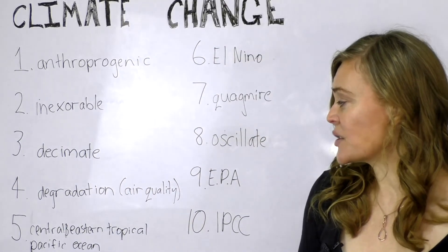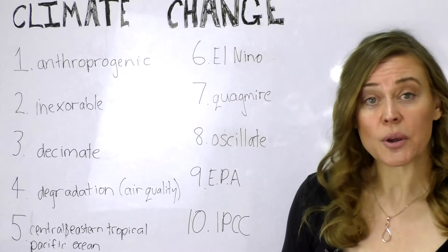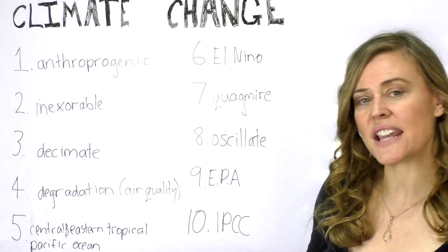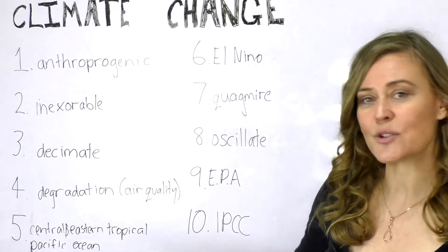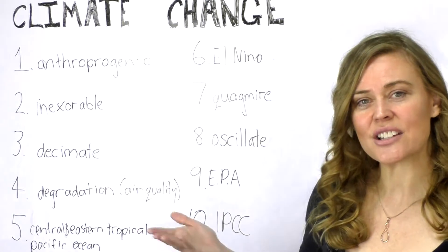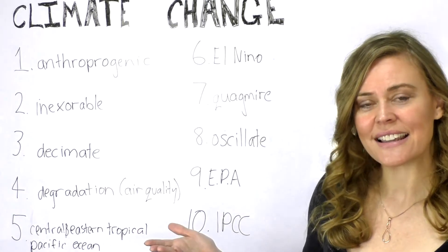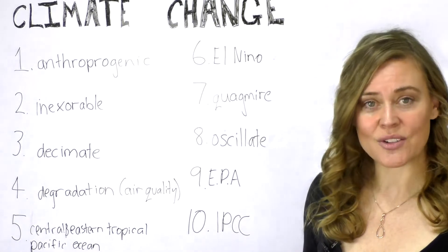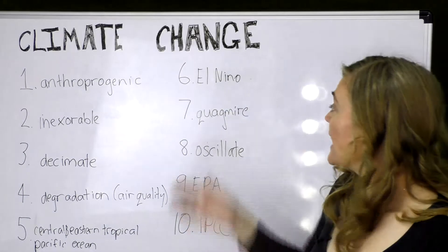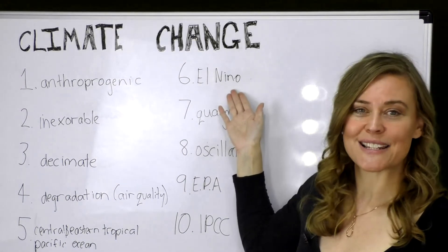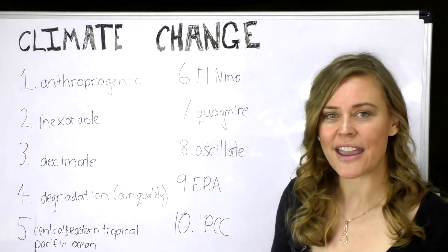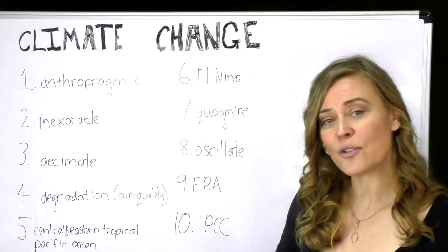Number five is the central and eastern tropical Pacific Ocean. This is important because the surface temperature in the central and eastern tropical Pacific Ocean is substantially rising, which is having major impacts on our climate. That effect is called the El Niño effect.